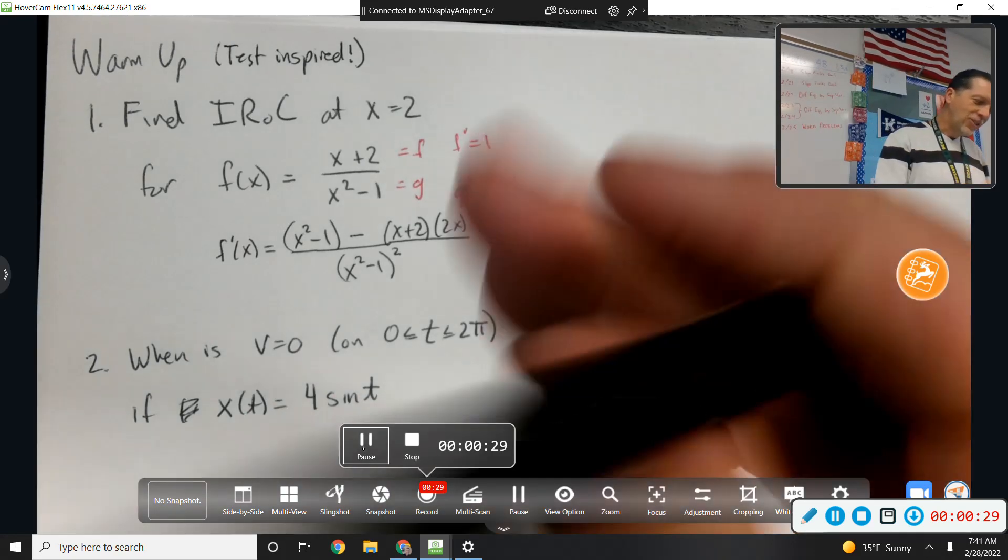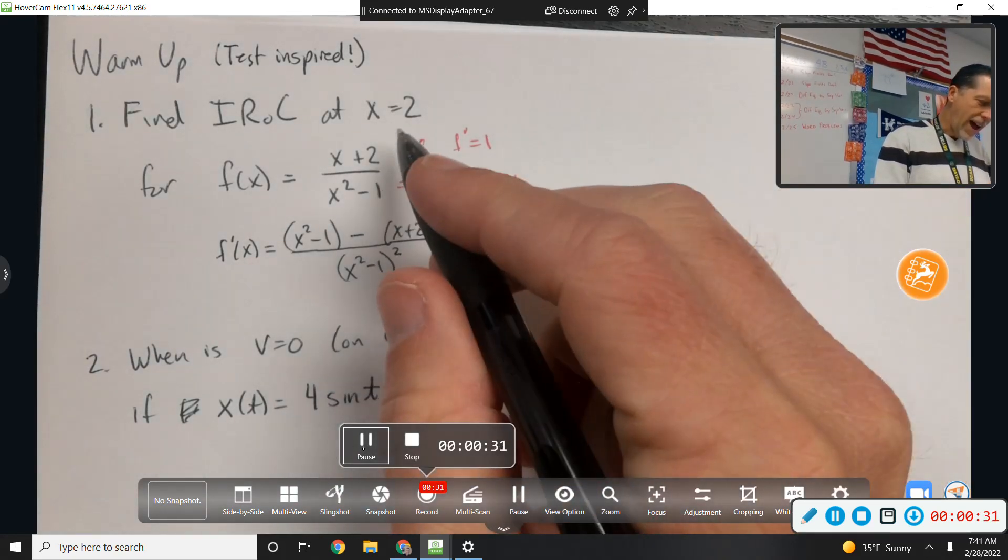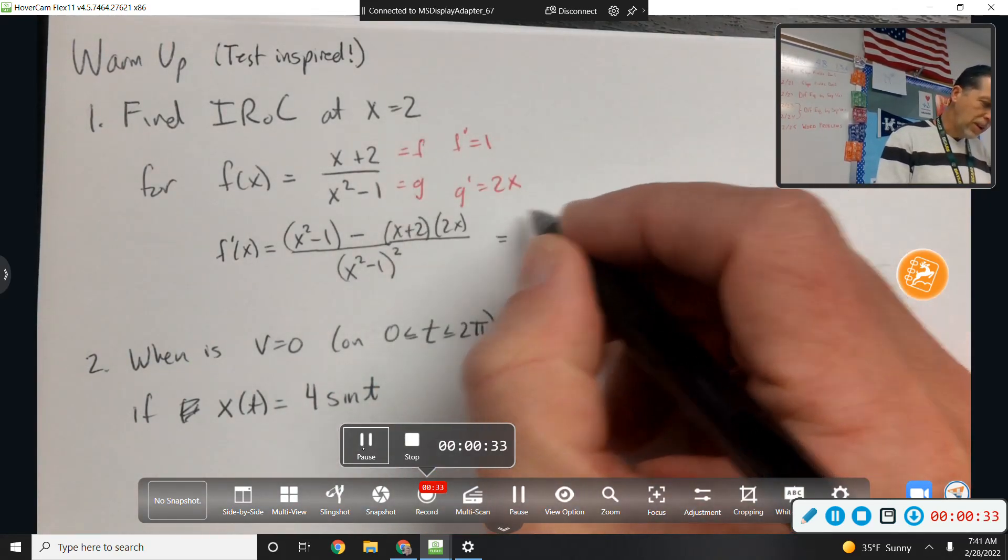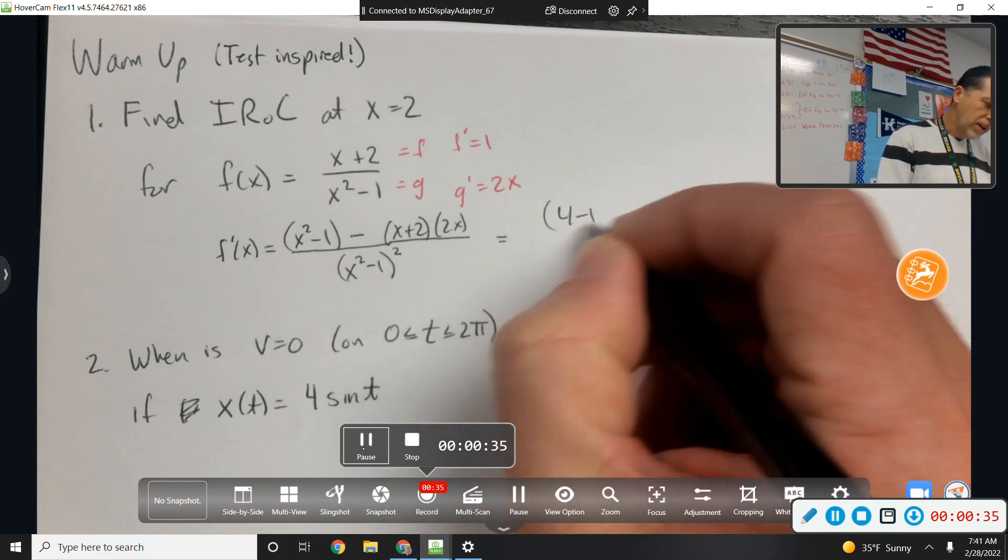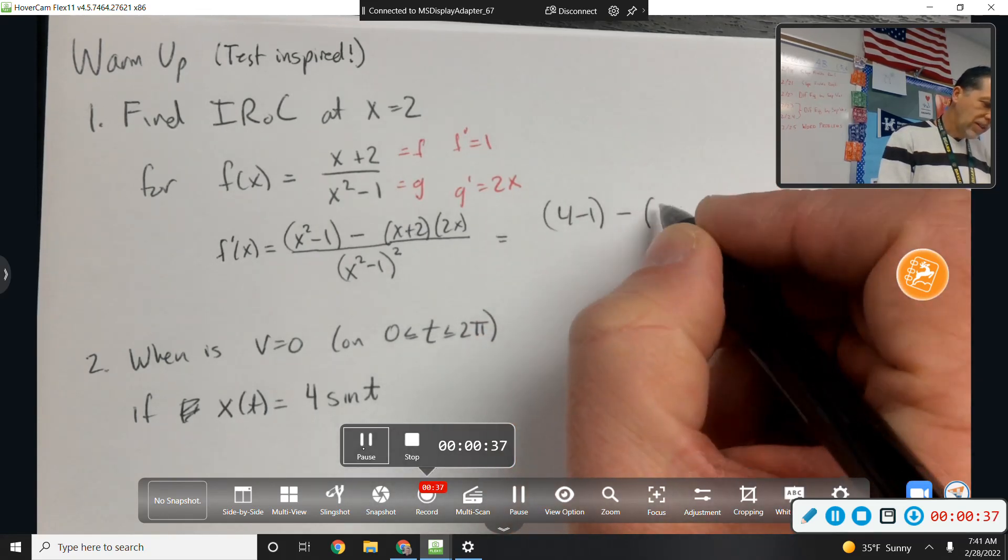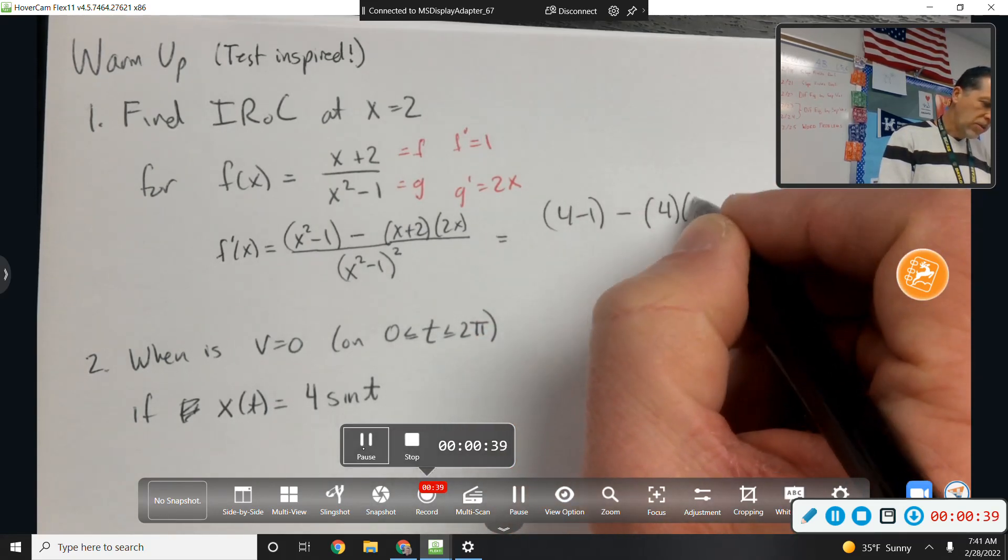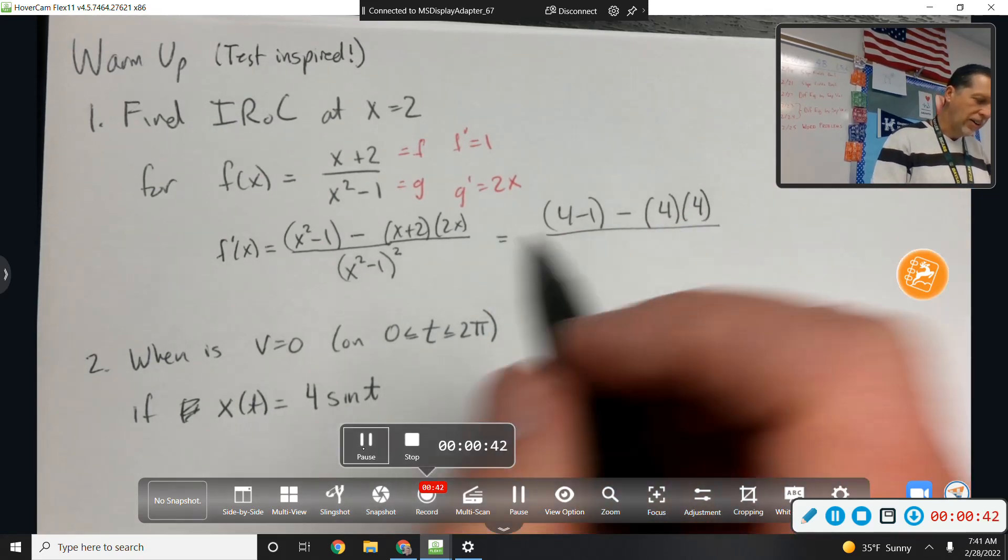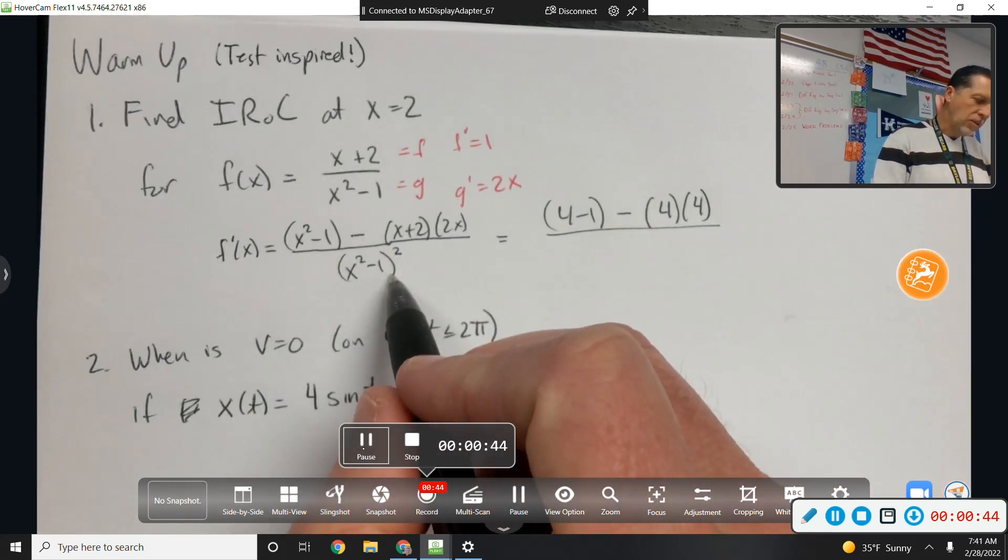And then plug in 2, so at x equals 2, that would be 4 minus 1 minus 4 times 4. I'm kind of doing a little bit of math on the fly here. 4 minus 1 is 3.